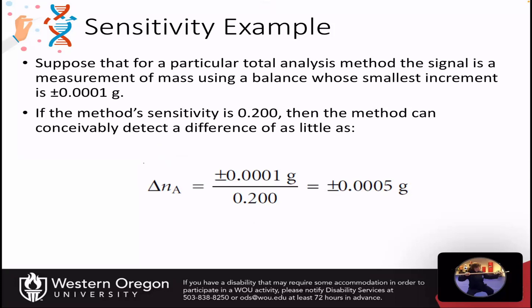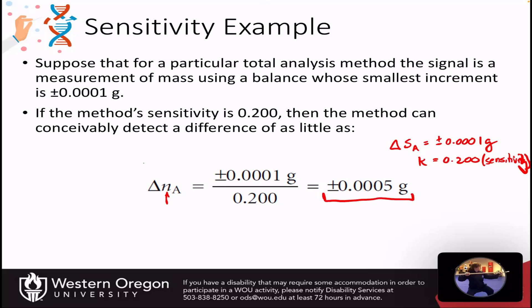Let's look at an example. Suppose that for a particular total analysis method, the signal measurement is mass using a balance whose smallest increment is ±0.0001 grams. So that is the delta S_A — it's going to be ±0.0001 grams. And if the method's sensitivity K is 0.200, then we can calculate the difference we can detect in absolute terms in the sample. We should be able to detect two samples that differ by ±0.0005 grams. That's our sensitivity.